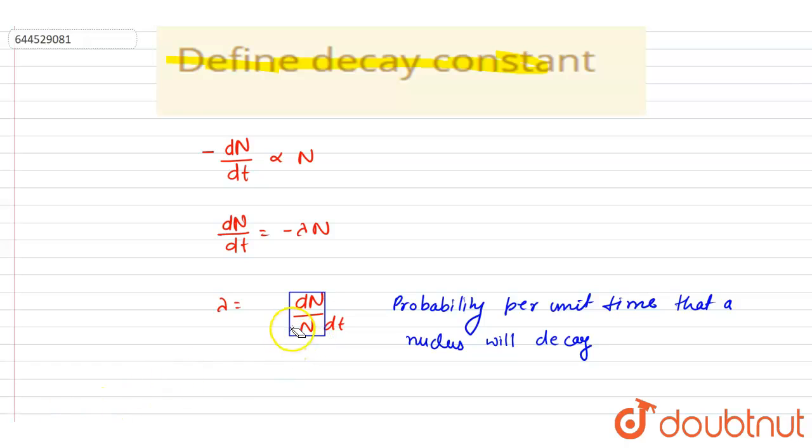So it is probability per unit time of decaying. Probability per unit time that a nucleus will decay is decay constant. So basically, decay constant determines the rate of decay.